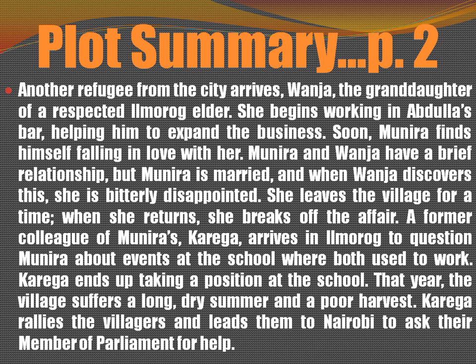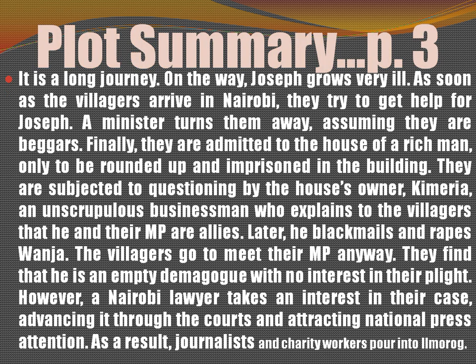During the journey, a boy called Joseph — who worked with Abdullah and was even adopted by him — fell seriously ill along the road. The people in the city were not concerned about the villagers and did not value their lives. Joseph was taken to a pharmacist and treated. When the people tried to reach the parliament house, they were frustrated and stopped, and held in a building belonging to a man called Chimeria, who began to question them.